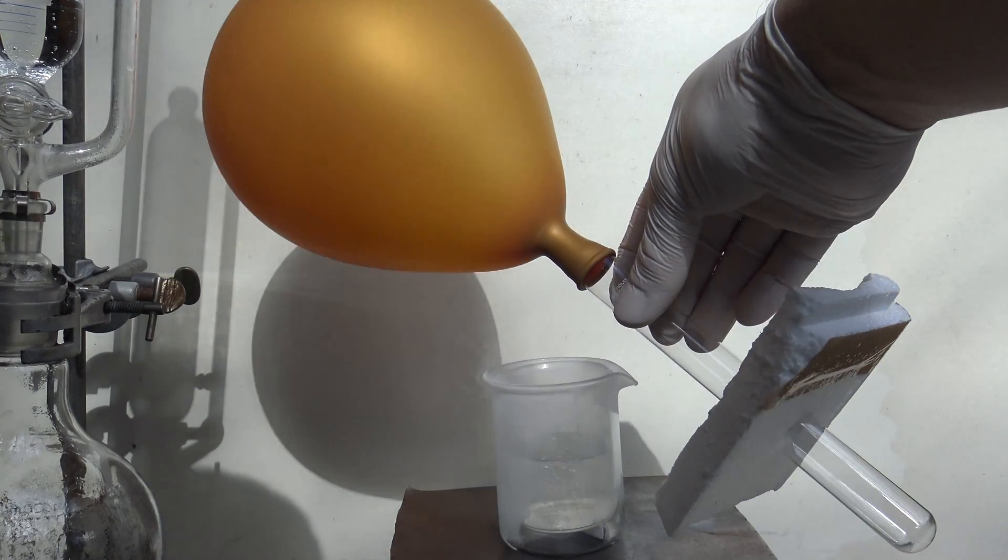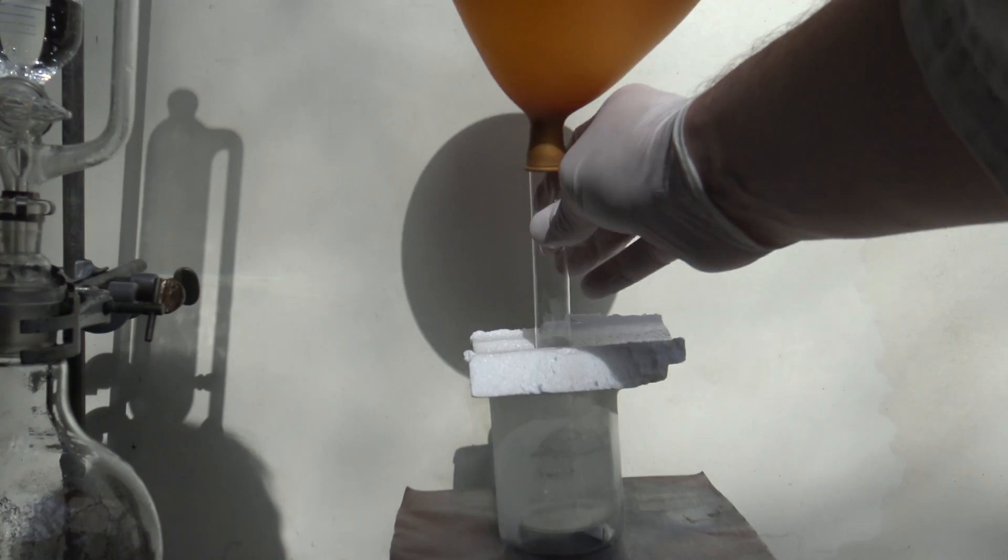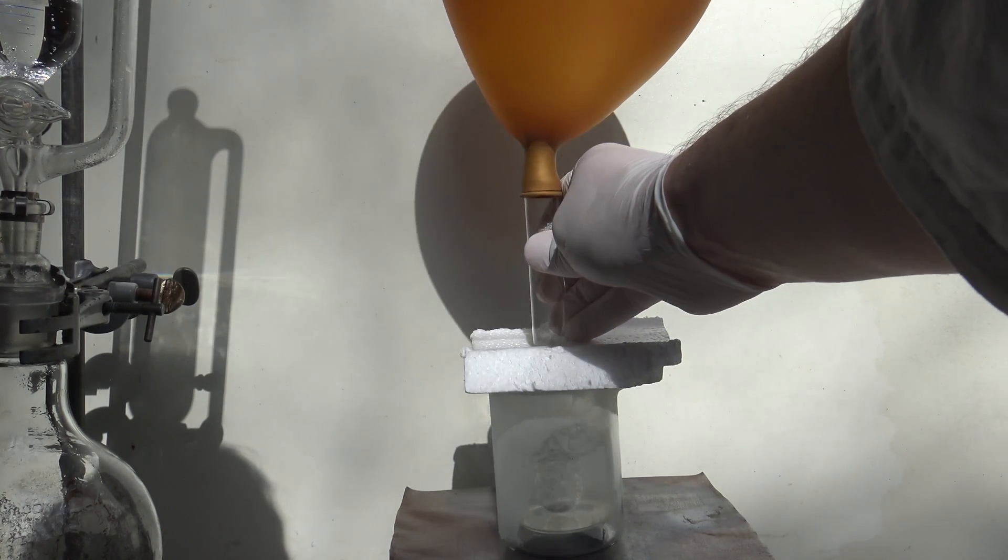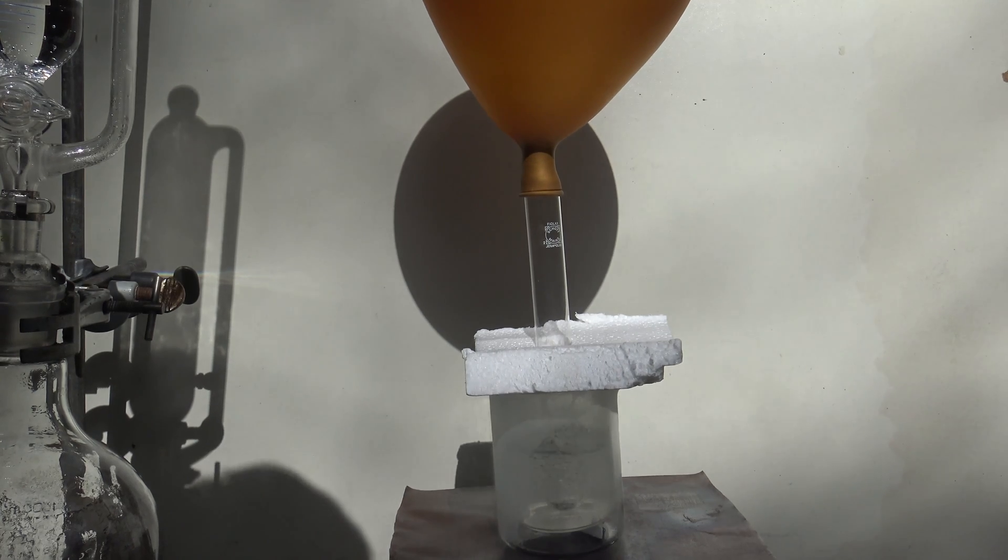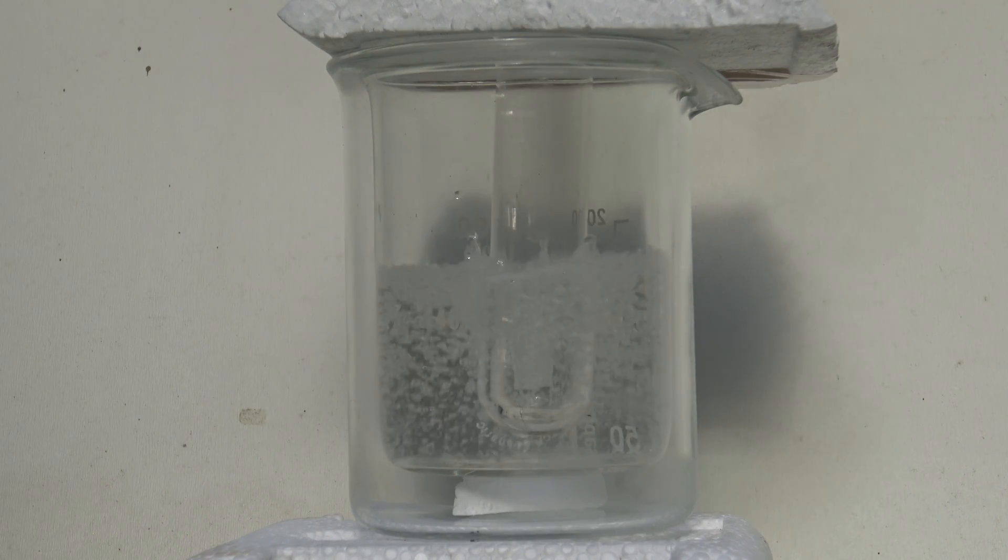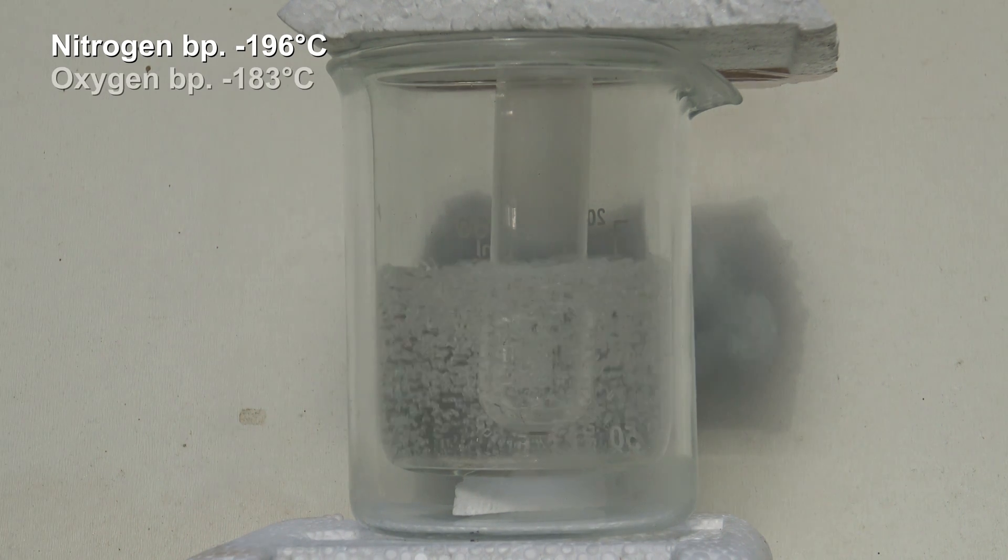The balloon was placed on top of a test tube, which had been poked through a styrofoam plate. The plate isolates and keeps the test tube in place. The nitrogen boils at minus 196 degrees C, while oxygen has its boiling point at minus 183 degrees C. This causes the oxygen to condensate in the tube.